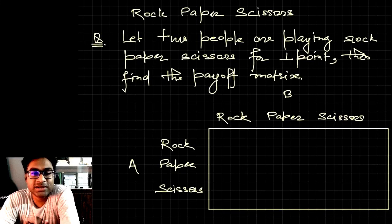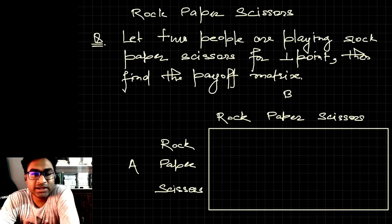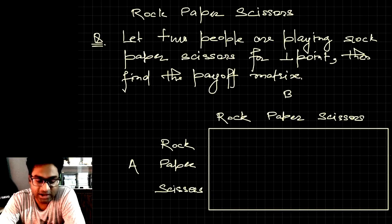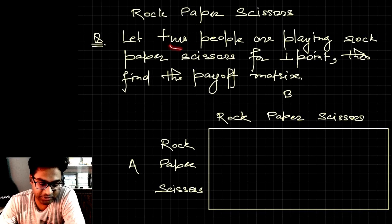In the first video we have seen that payoff matrices are used to represent a two-person zero-sum game. In this video we will solve an example in which we will find the payoff matrix of a game: rock paper scissors. The situation is: suppose two people are playing rock paper scissors.